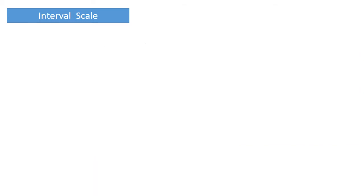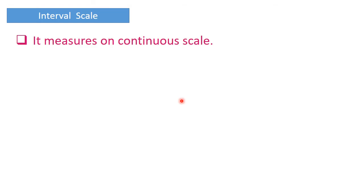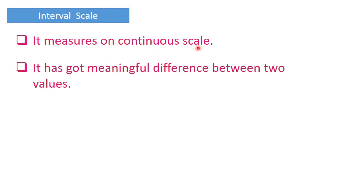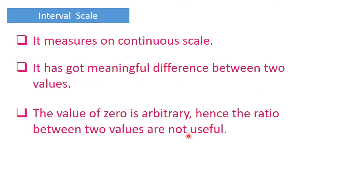Next we will look into interval scale. It measures on a continuous scale and has a meaningful difference between two values or categories. However, the value of zero in this case is an arbitrary number, hence the ratio between two values is not useful.